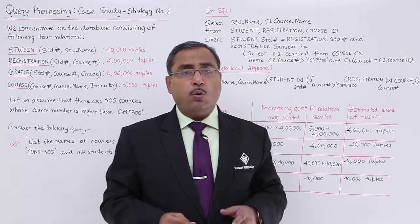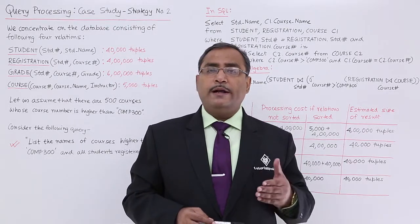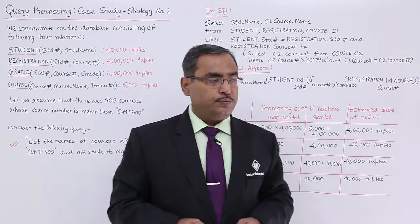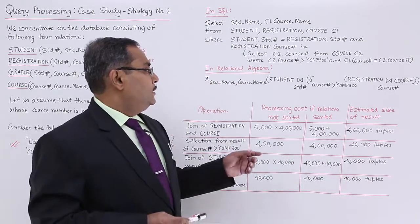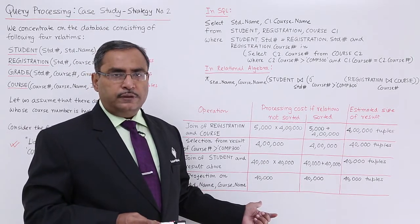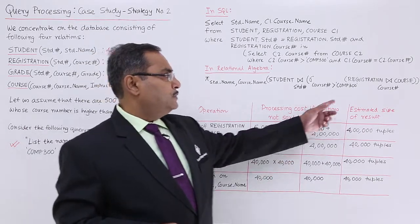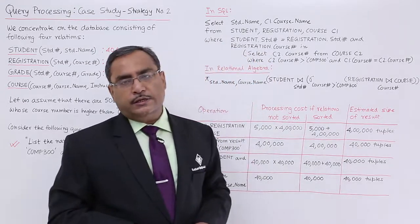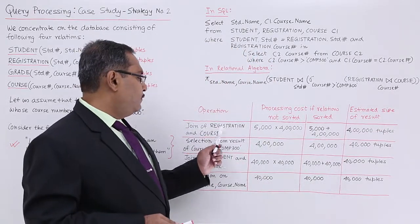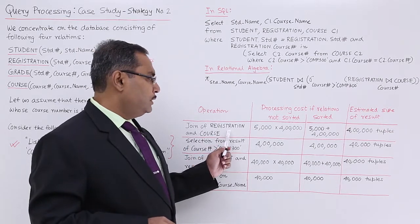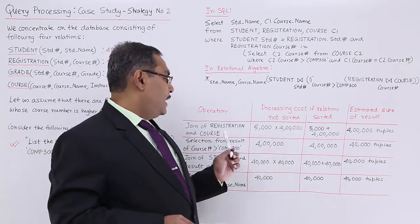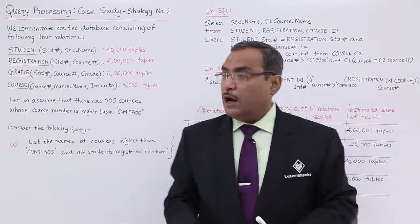The change made here is that we aliased course into C1 and C2. Now let us go for the complexity calculations in terms of number of tuples. We should first consider the registration natural join course, done on the course number. Registration has 400,000 tuples and course has 5,000 tuples, as discussed earlier.